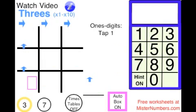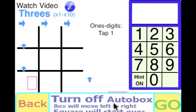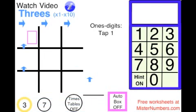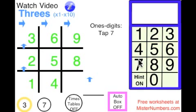And you have the choice to turn the auto box on and go left to right with the ones digits. 3, 6, 9, 2, 5, 8, 1, 4, 7, 0.